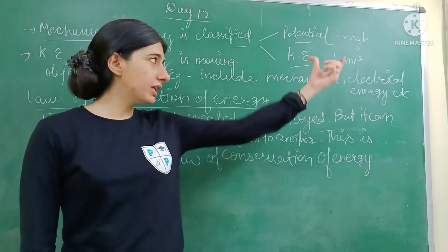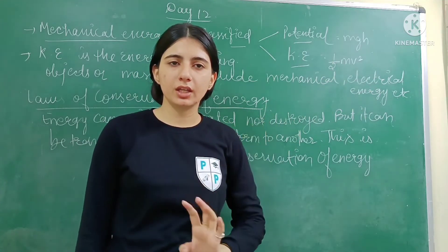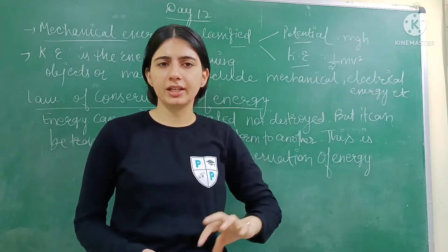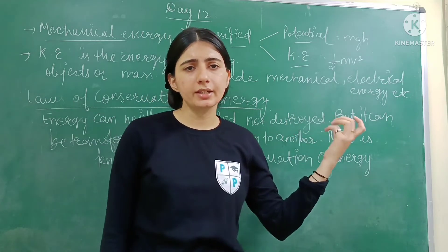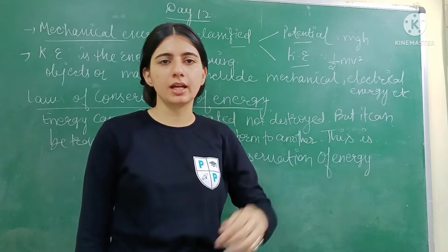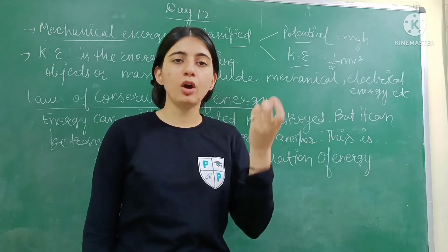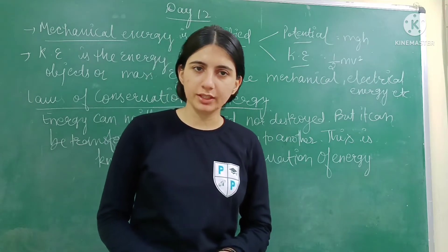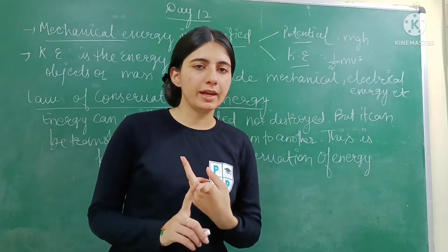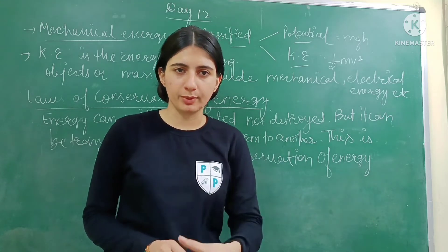The formulas are MGH for potential energy and ½mv² for kinetic energy. Using these formulas, you can calculate different quantities. If potential energy is given, you can find mass and height. If mass and velocity are given, you can calculate kinetic energy. These two topics are clear: potential energy is the energy stored in an object for future use, and kinetic energy is the energy of moving objects.